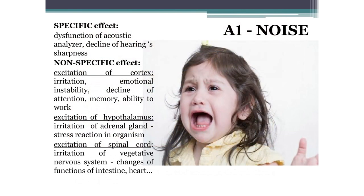The effects of noise exposure can be divided into specific and non-specific. Specific effects include dysfunction of the acoustic analyzer and decreased hearing acuity. For the relatively low noise levels found in a hospital, non-specific effects are more characteristic — these include excitation of areas of the cerebral cortex, leading to irritation, emotional instability, decreased attention, decreased memory and decreased ability to work. Noise also causes excitation in the hypothalamus, leading to an increase in adrenaline and a stress reaction. Arousal can also be transmitted to the spinal cord, disrupting the autonomic nervous system. A person working at a high noise level has an increased risk of gastritis, heart attack and hypertension.